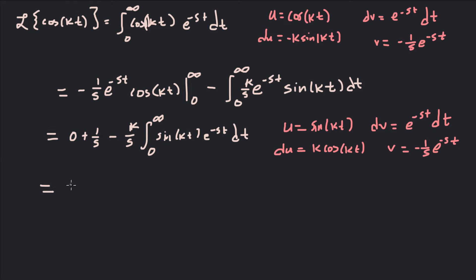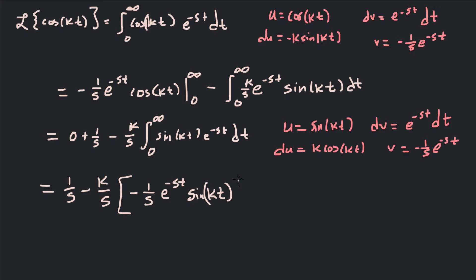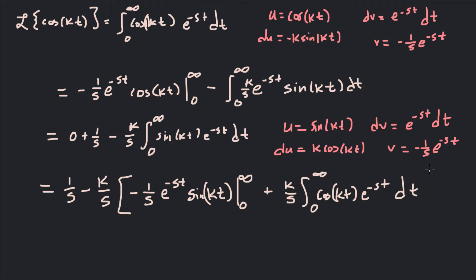So we have 0 plus 1 over s minus k over s times: applying uv minus the integral of v du, uv is negative 1 over s times e to the negative st times sine kt, evaluated from 0 to infinity, minus the integral of negative 1 over s times e to the negative st times k cosine kt dt. And that integral is just k over s times the Laplace transform of cosine kt.